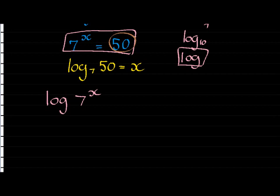Which means if I put 7 to the power of x into a logarithm with base 10, I'll get the same answer as when I put 50 in there, because the inputs are exactly the same. 7 to the power of x is 50. That's what we have here in the beginning.